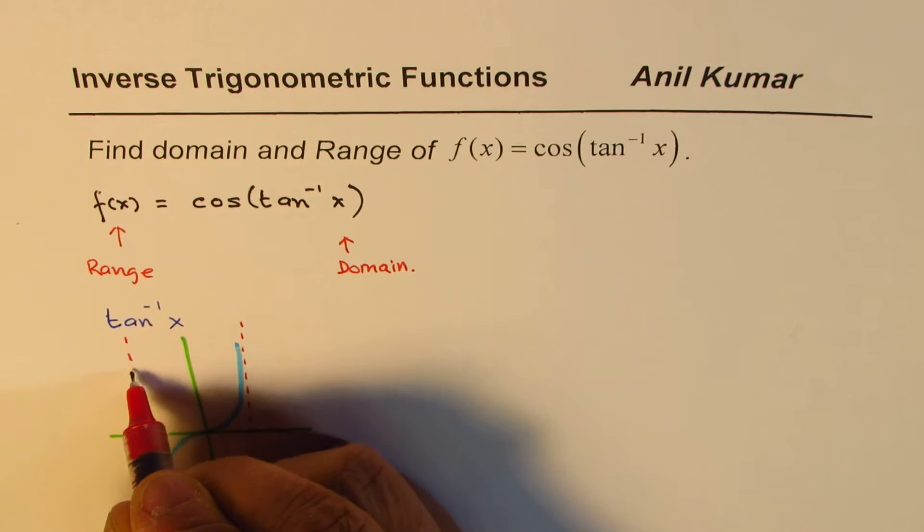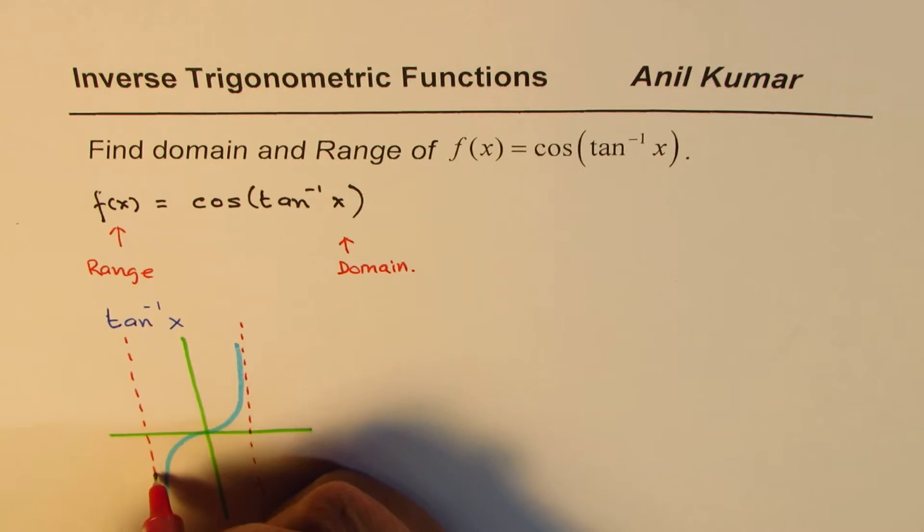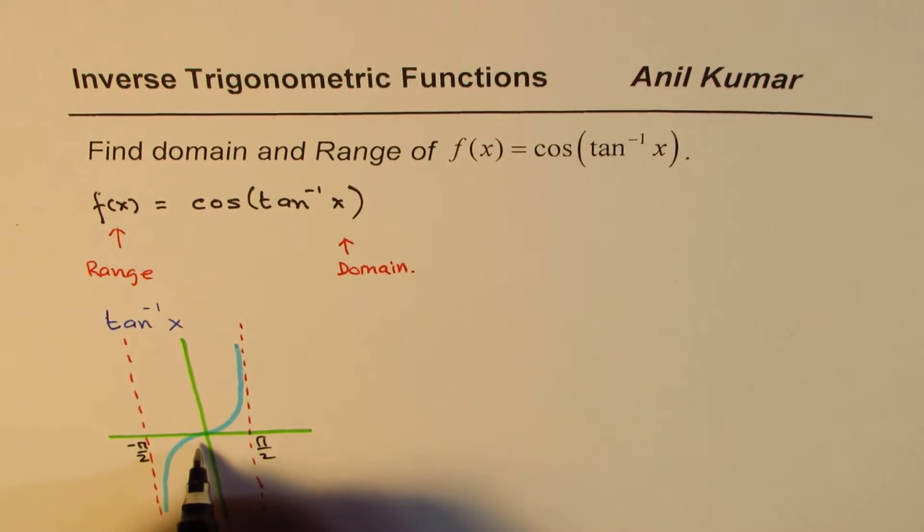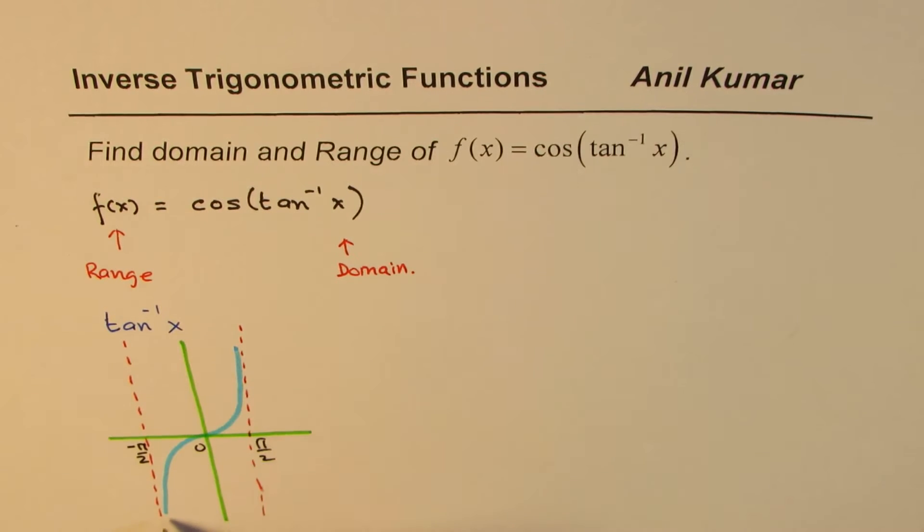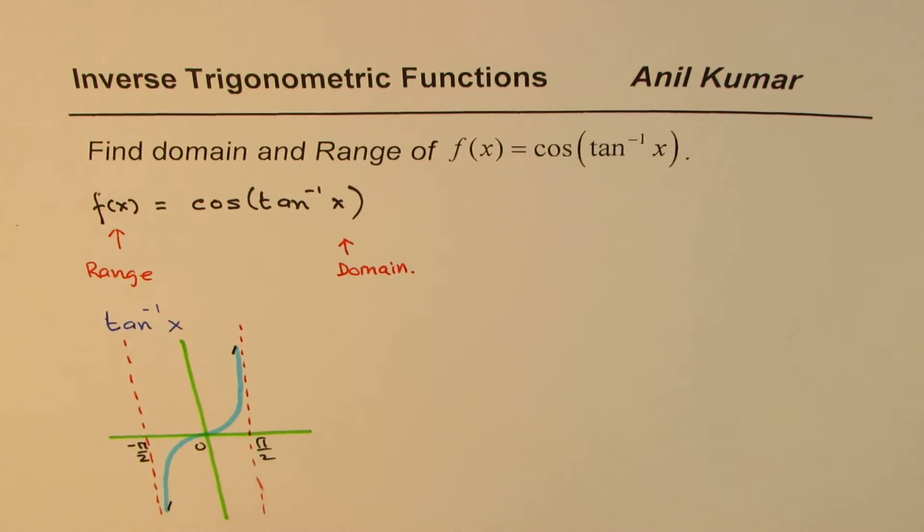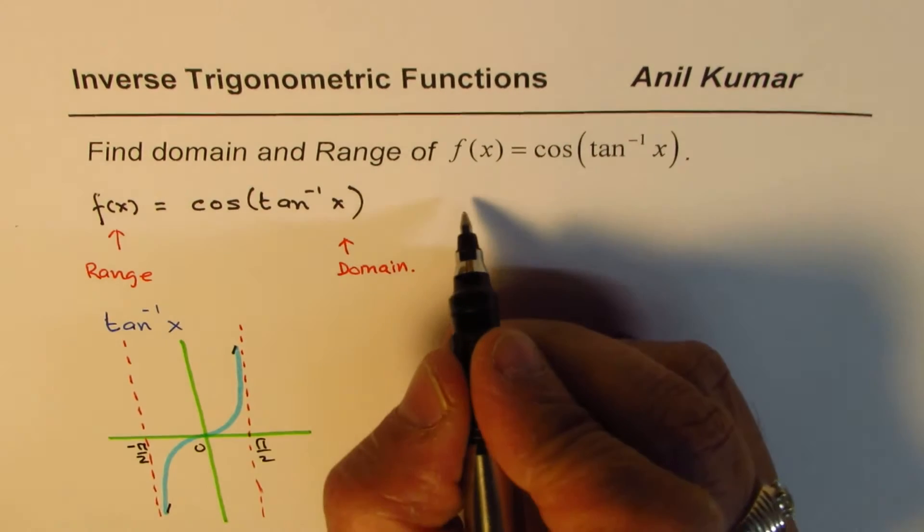This pattern actually repeats but it is one-to-one only in this interval. The interval which we take by default for tan⁻¹(x) is from -π/2 to +π/2. The range is from -∞ to +∞. That gives you the domain of the function.